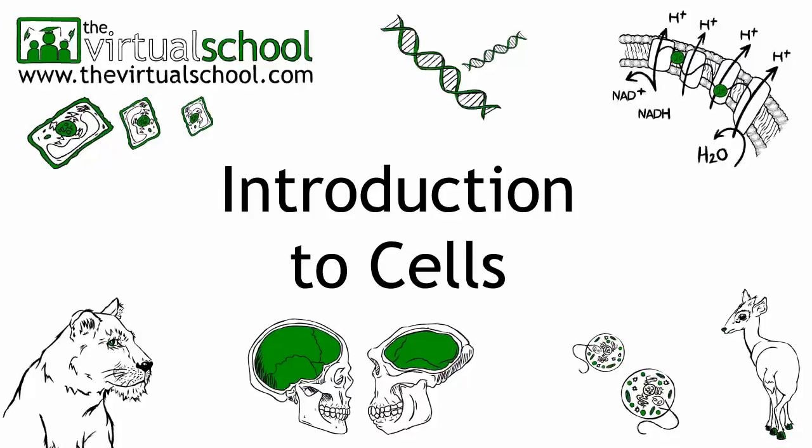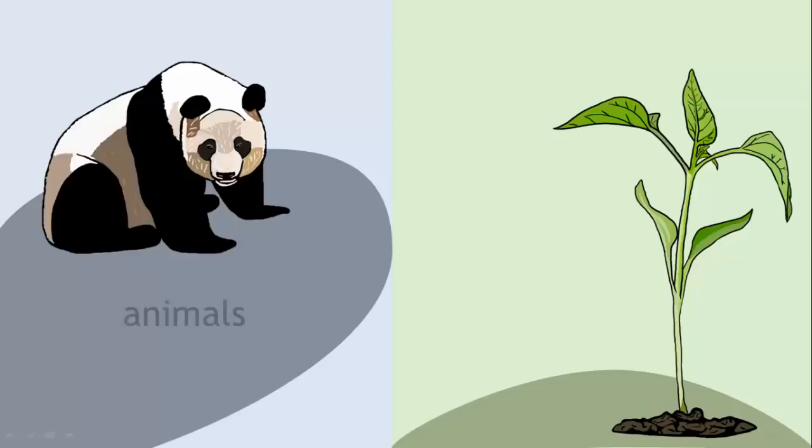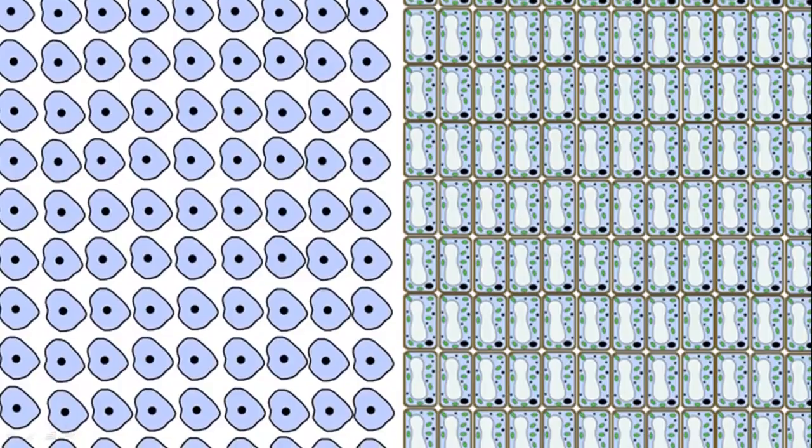The cell is the basic unit of life. Some living organisms such as animals and plants are made of hundreds of trillions of these basic units of life called cells.